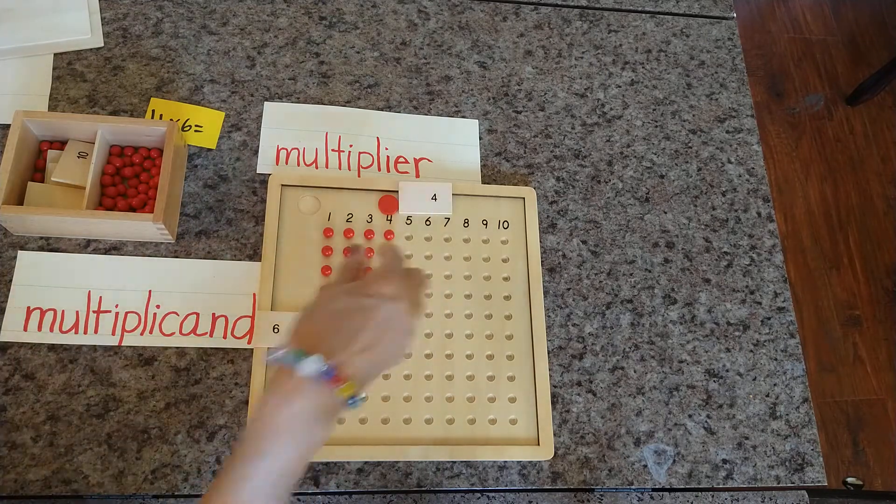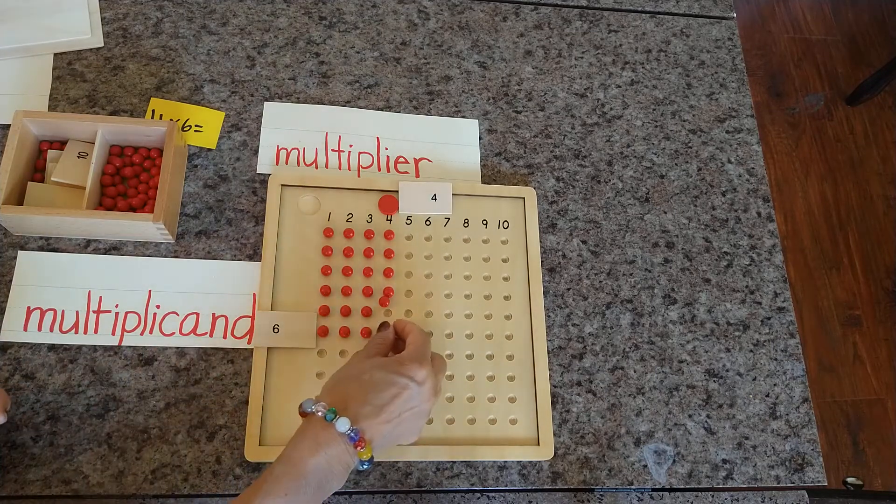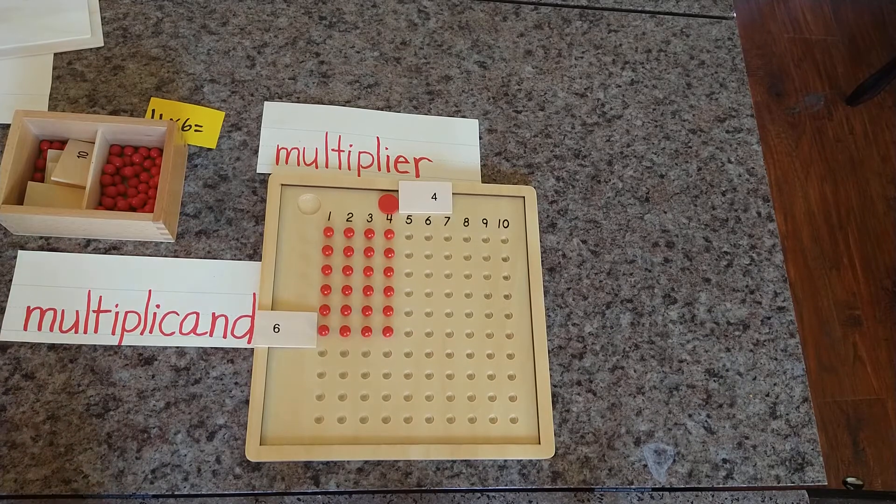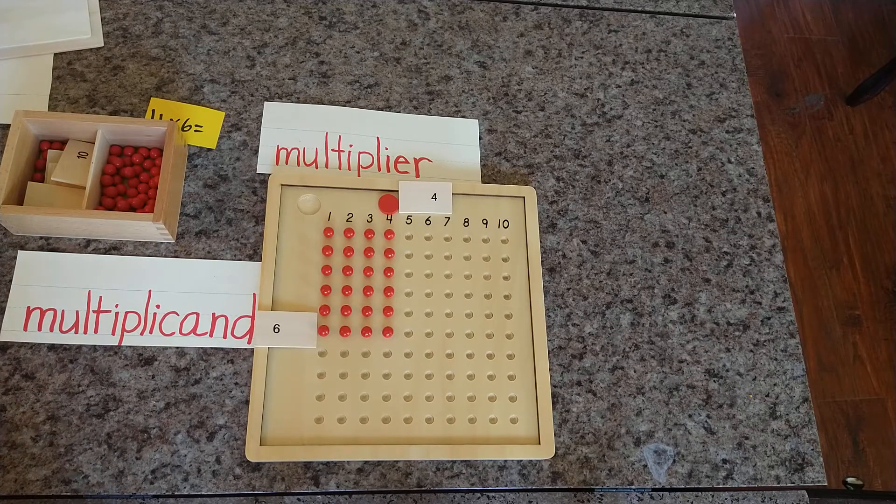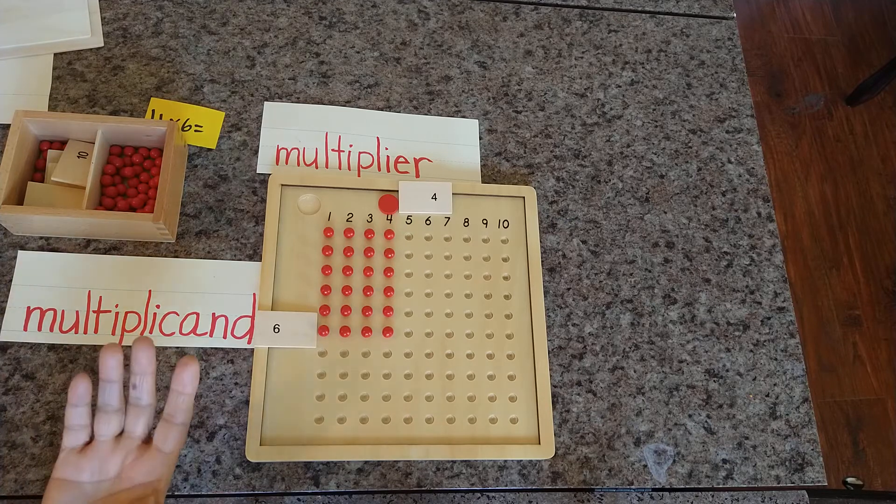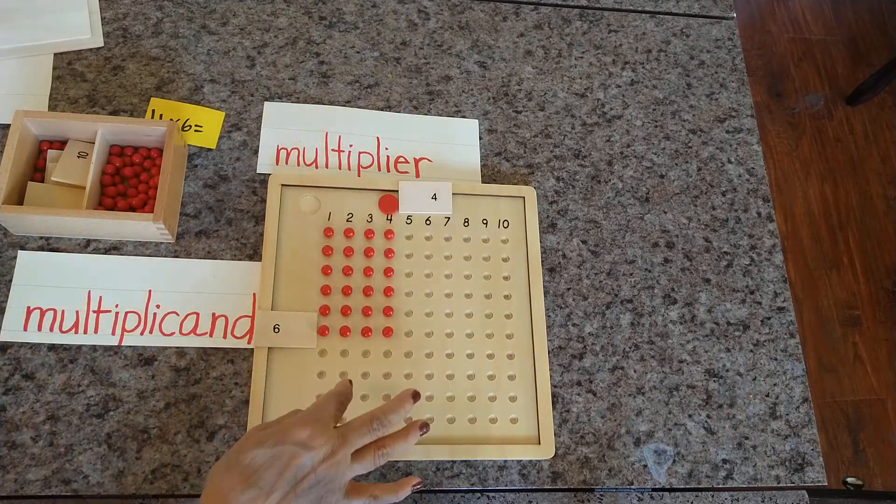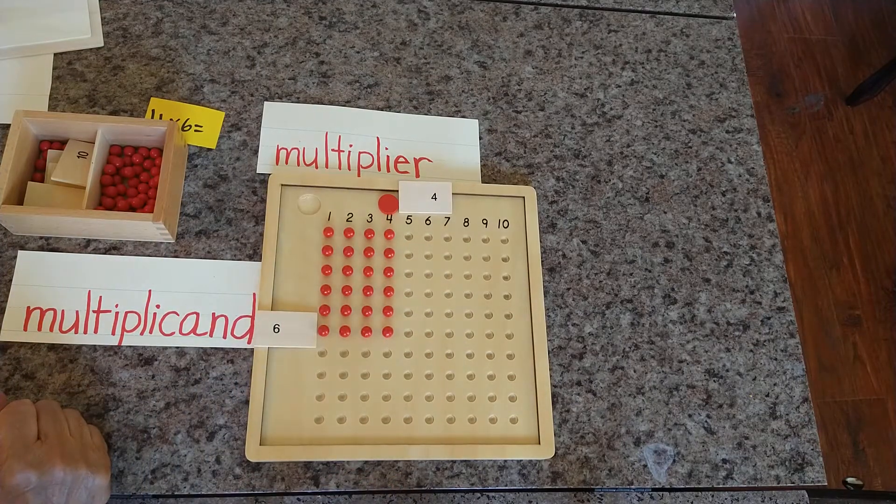1, 2, 3, 4, 5, 6. 4 times 6. Now we need to stop because we need to bring 4 times 6. We already did 1 times 6, 2 times 6, 3 times 6, 4 times 6.